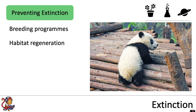Habitat regeneration is another prevention method. If there's been an area of habitat loss or habitat change, replanting trees to make a woodland or regenerating a heathland habitat would be important for preventing extinctions of species.